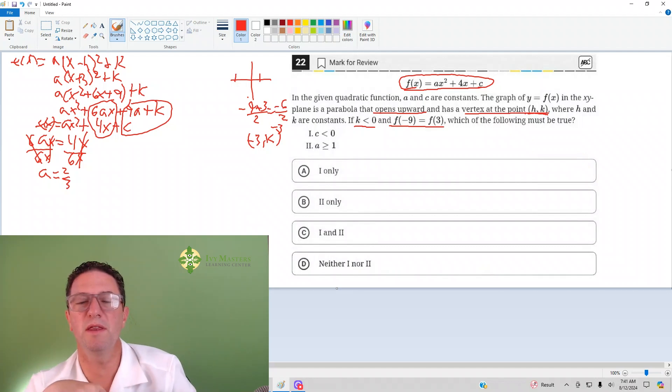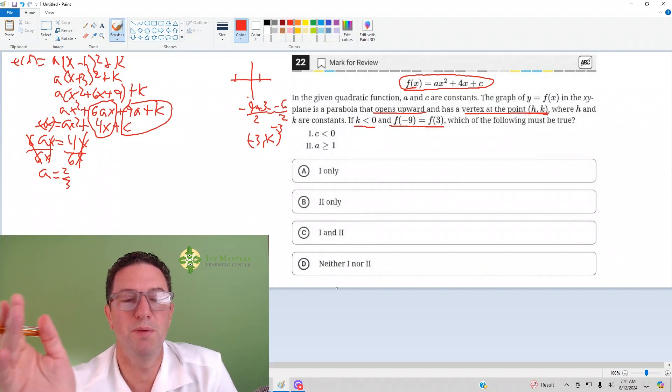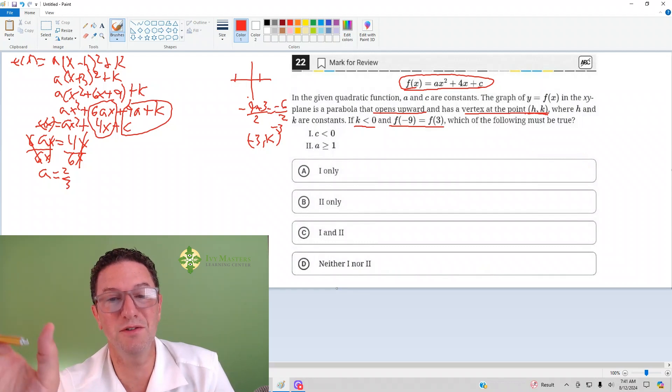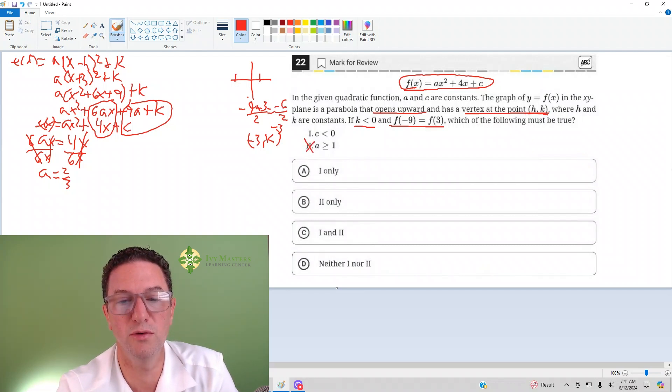You might have been thinking the parabola opens up so a's got to be positive, so Roman numeral II is true. But notice it says greater than or equal to one. Two-thirds is greater than zero, still positive, but it is not greater than or equal to one. Roman numeral II is false. So if you determine that, you could eliminate B and C, and worst comes to worst, 50-50, you're in much better shape.